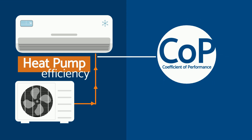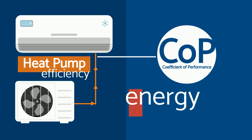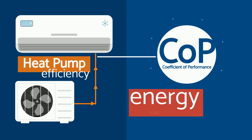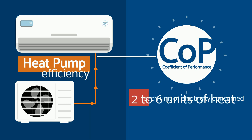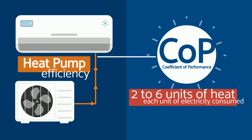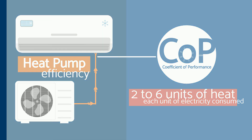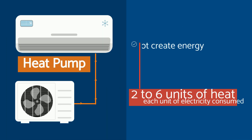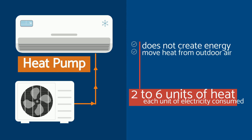In spite of the first law of thermodynamics, which tells us that energy can neither be created nor destroyed, the heat pump can yield two to six units of heat for each unit of electricity consumed. The heat pump is not creating this energy, but simply moves heat from cooler outdoor air into the warmer inside.